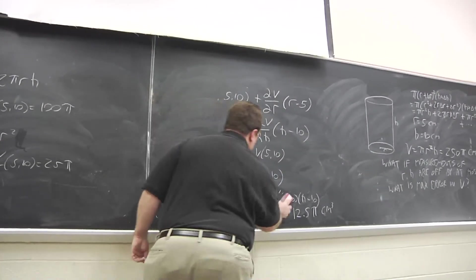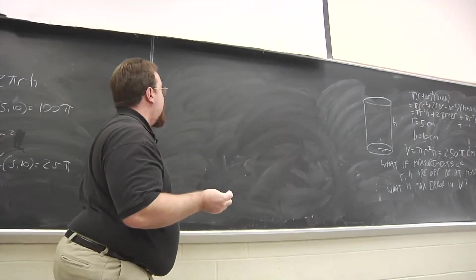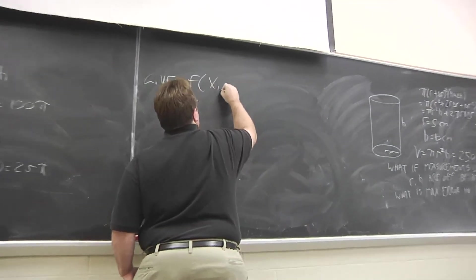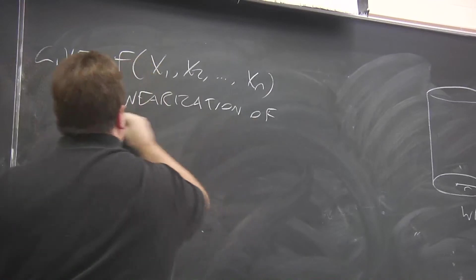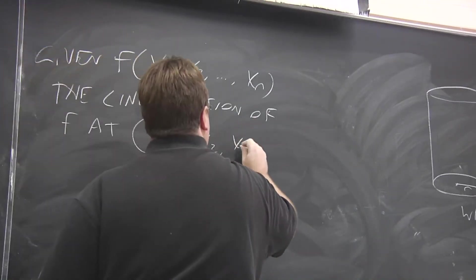Now all of this is about functions of two variables. But we have more than two. It all works out in a very similar way. You have a function of n variables, and the linearization of f at some point.